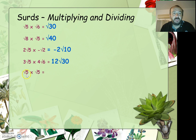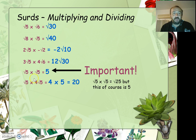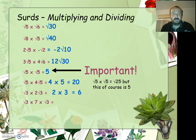Root 5 times root 5 — by definition that's the square root of 25, and since 5 times 5 is 25 and the square root of 25 is 5, that's just 5. Root 5 times 4 root 5 is going to be 4 times root 25, and root 25 is 5, so that comes to 20. Root 3 times 2 root 3 is 2 times root 3 times root 3 — root 3 times root 3 is 3 — so that's 2 times 3 which equals 6. And 7 times root 3 times root 3: root 3 times root 3 is just 3, so this is 7 times 3, which equals 21.